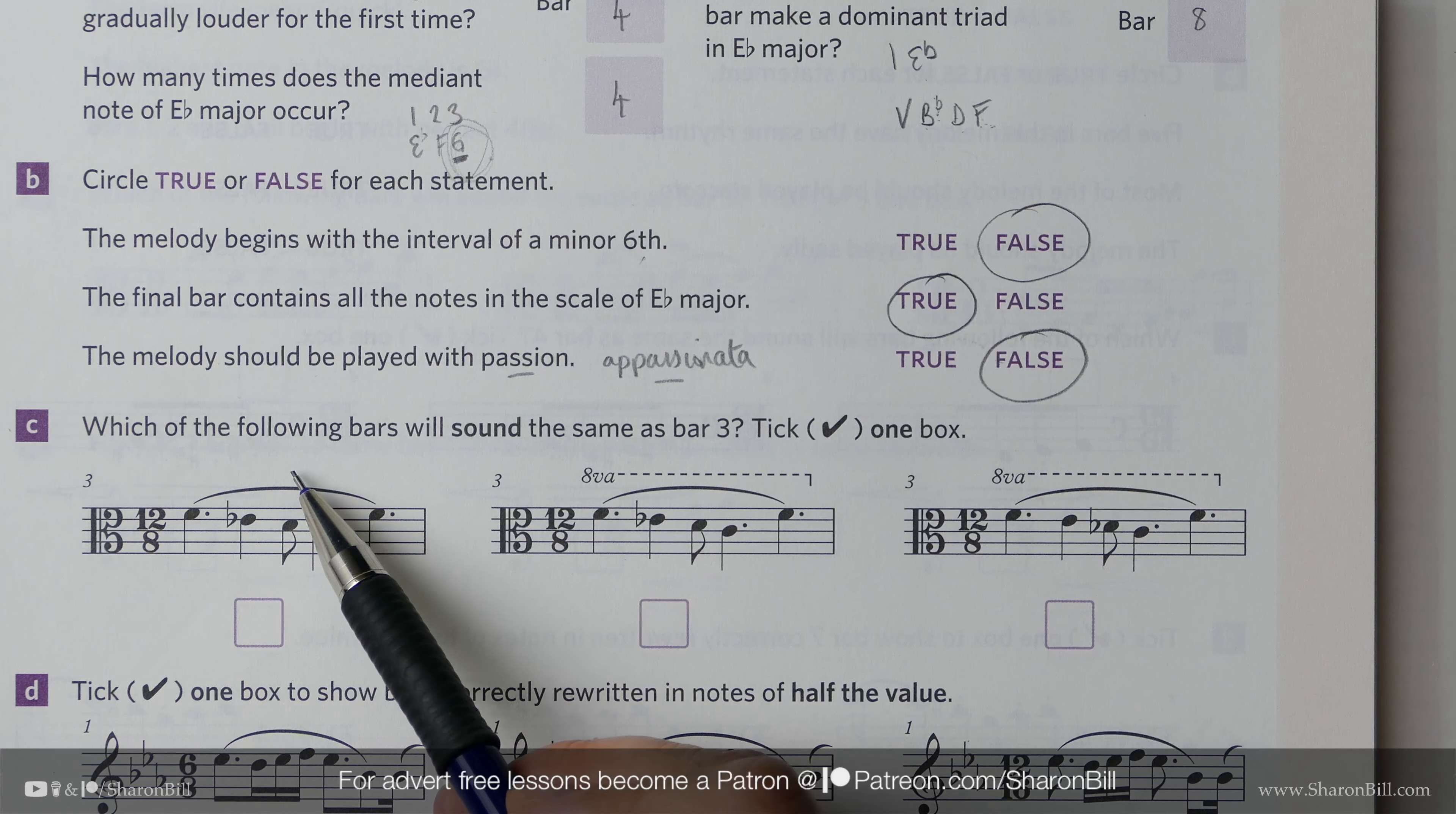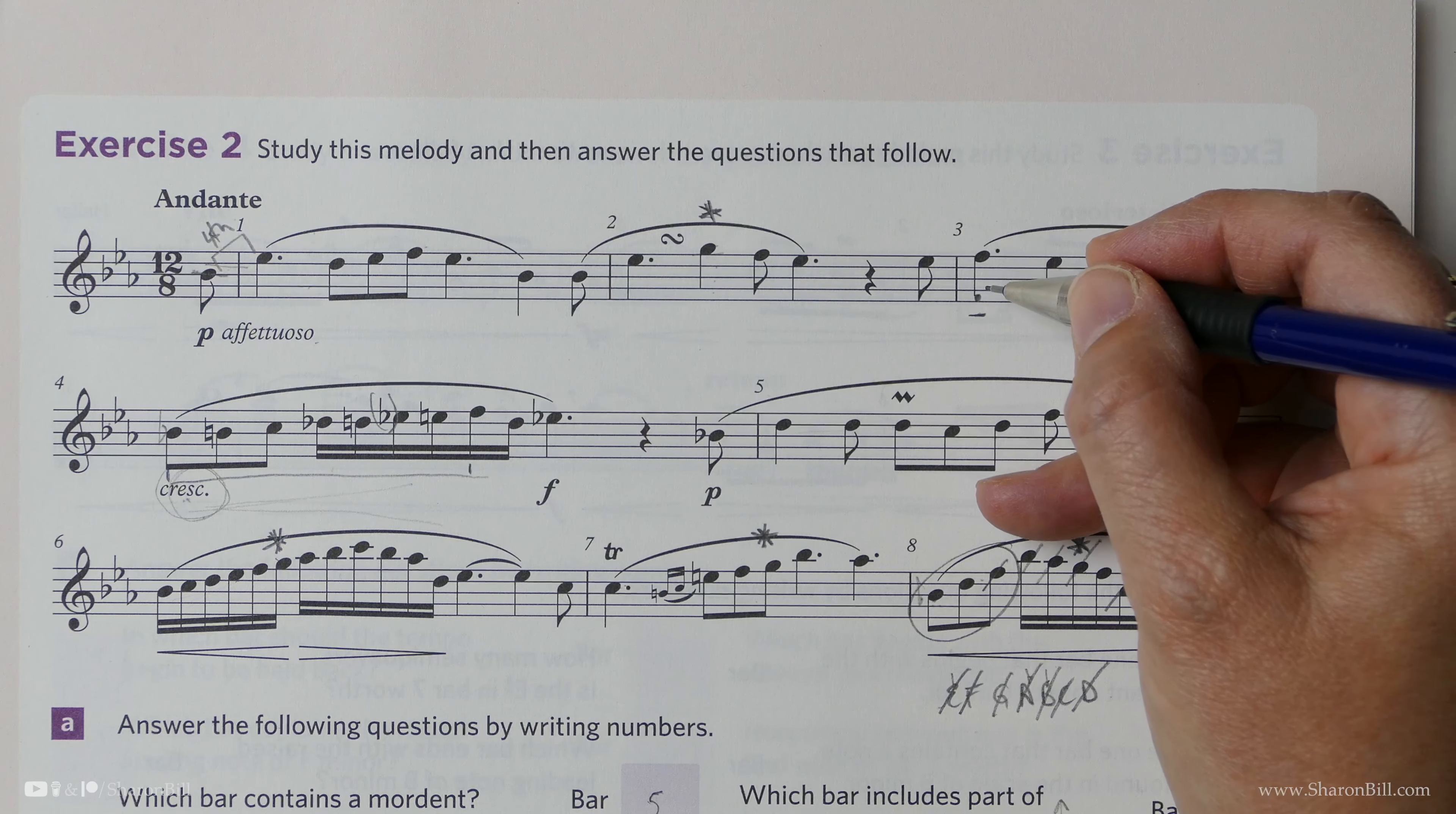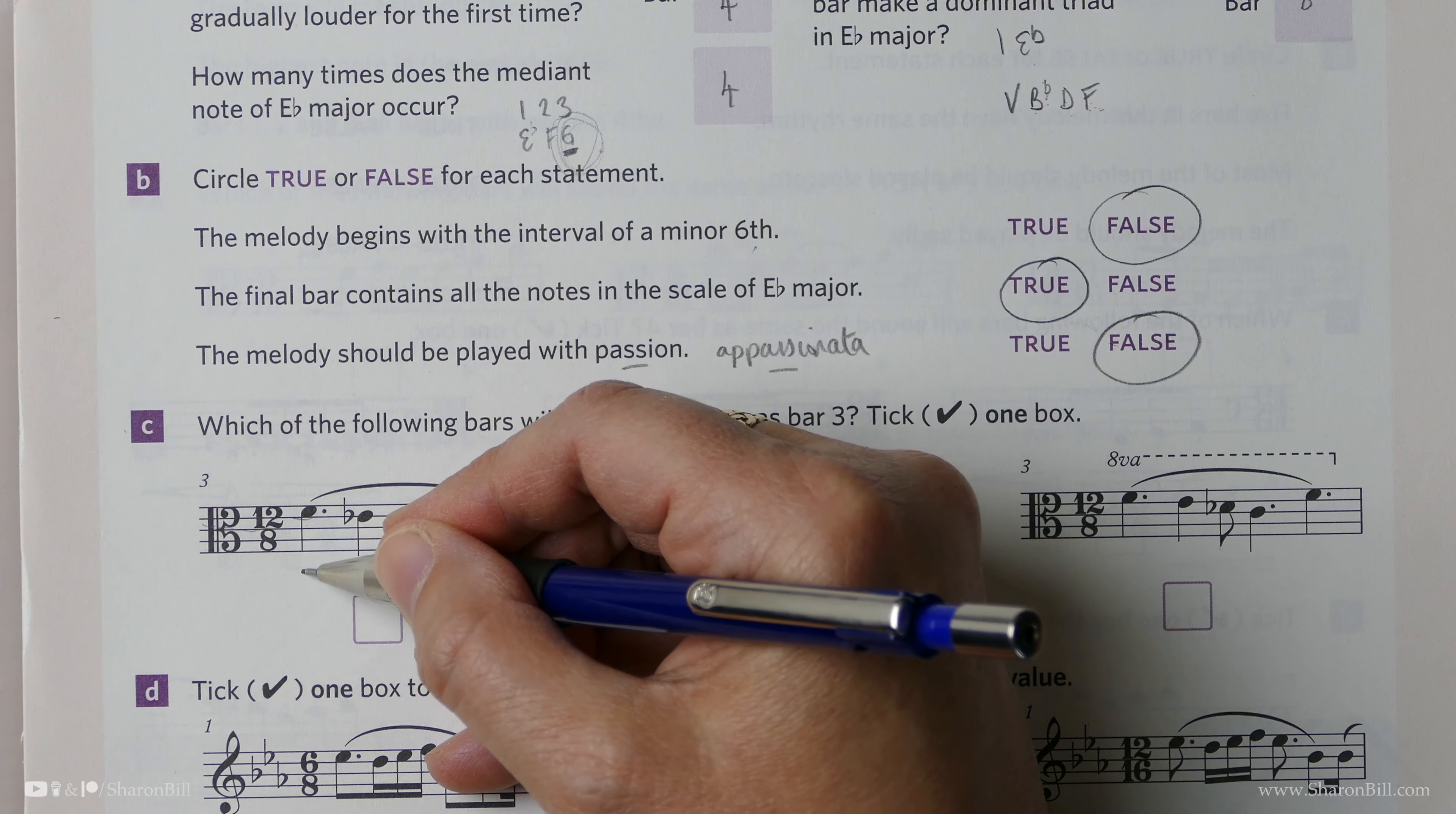And then we get to choose which of the following bars will sound the same as bar three. So it may be written differently, and we can see we've changed clef. So which is going to be the same sound as bar three? Let's think what we've got here. So there's middle C, there's the F, there's the F above that, coming down in step and back to the F. So we're an octave plus, aren't we? Let's see what we've got here. Of course, our key signature is B-flat, E-flat, A-flat with 12 over 8.